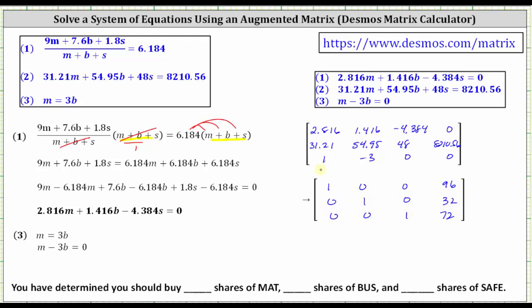Remember, the first column represents the coefficients of M, the second column represents the coefficients of B, and the third column represents the coefficients of S. Interpreting the first row, we have 1M = 96, or M = 96. In the second row, we have 1B = 32, or B = 32. In the third row, we have 1S = 72, or S = 72. So now we know you should buy 96 shares of MAT, 32 shares of BUS, and 72 shares of SAFE. I hope you found this helpful.